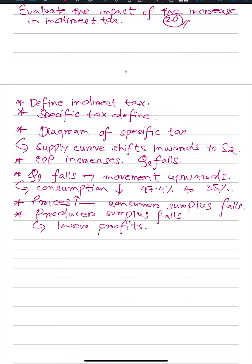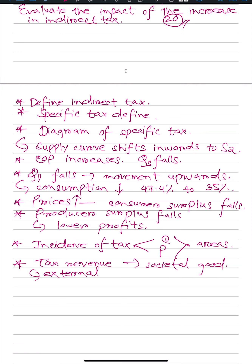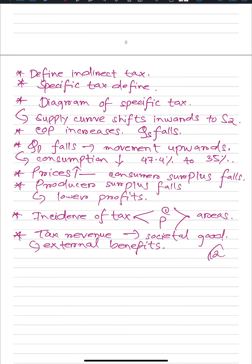Then you talk about the incidence of tax — on consumers and producers. The incidence of tax on consumers is the upper part; the incidence of tax on producers is the lower part. You basically talk about the areas. It was done to increase tax revenue, so you say this tax revenue can be used by the government to do societal good — build roads and railways infrastructure — and they will cause external benefits. All of these are a lot of points and will get you your 12 marks.